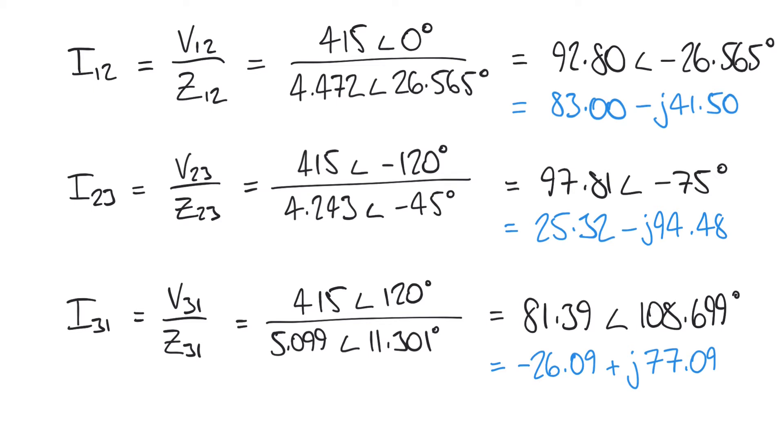So now we can find the line currents. We now know the phase currents that actually flow through each of our phase impedances in our network, but our line currents will be given by the differences between these phase currents as we saw in the equations at the start. So let's do these very quickly. We have I1 equal to I12 minus I31, and we know the values of those now in rectangular form, so we can just perform that subtraction very easily, subtracting the real terms and subtracting the imaginary terms. Watch out for double negatives where they occur, but we get a result here of 109.09 minus J118.59 amps.